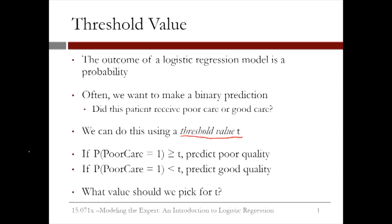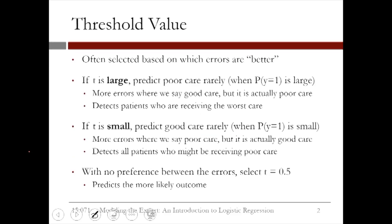But what value should we pick for the threshold t? The threshold value t is often selected based on which errors are better. You might be thinking that making no errors is better, which is of course true. But it's rare to have a model that predicts perfectly, so you're bound to make some errors.